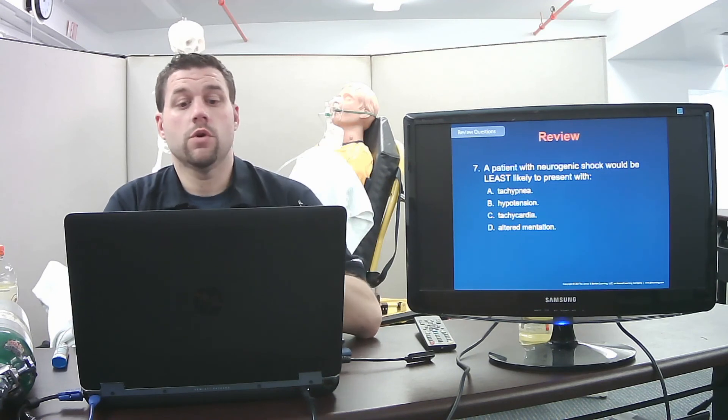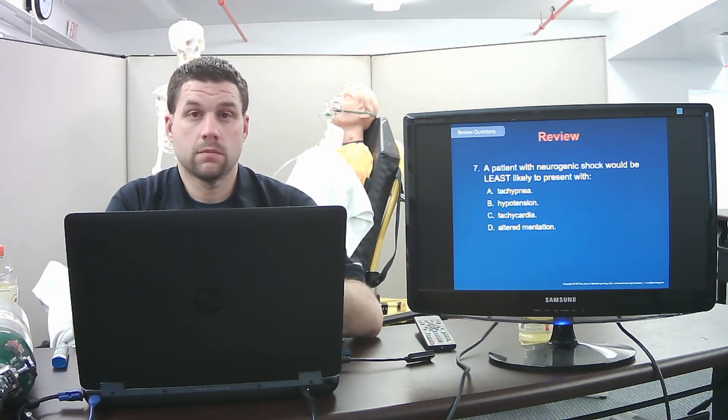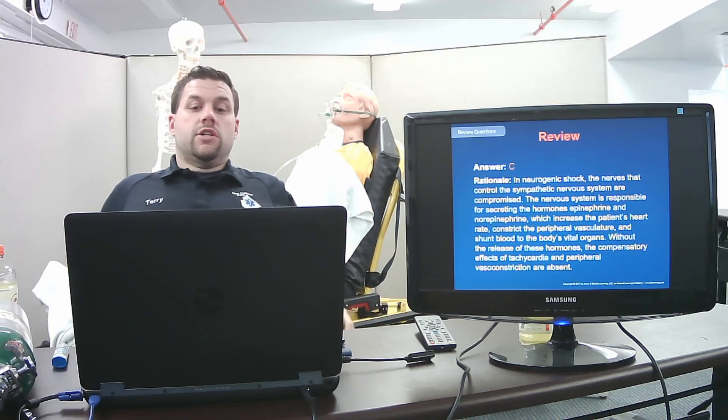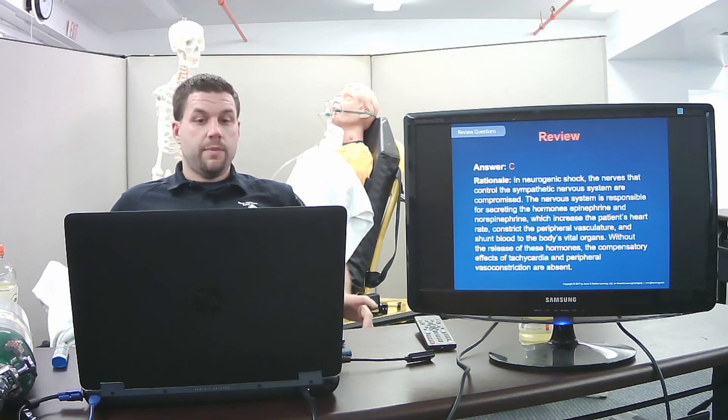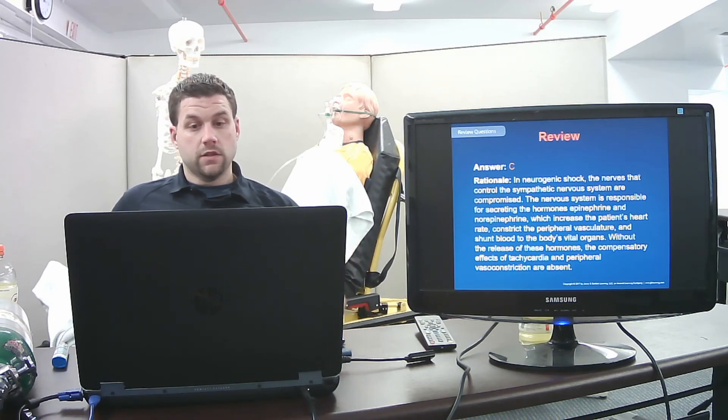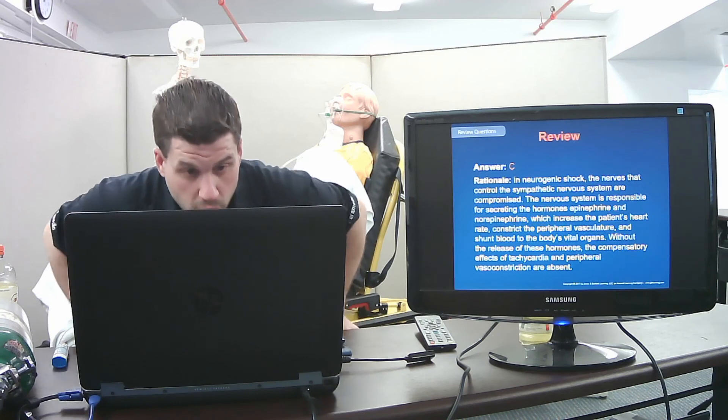A patient with neurogenic shock would be least likely to present with — answer C. In neurogenic shock, the nerves controlling the sympathetic nervous system are compromised. The nervous system can't secrete epinephrine and norepinephrine, which normally increase heart rate, constrict peripheral vasculature, and shunt blood to vital organs. Without these hormones, the compensatory effects of tachycardia and peripheral vasoconstriction are absent.